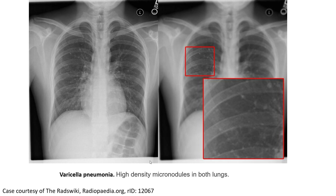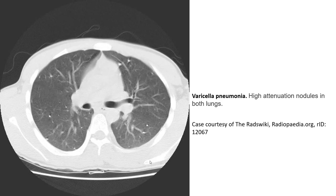The chest X-ray shows high-density micronodules in both lungs. This is the CT of the same case, showing high-attenuation nodules in both lungs.